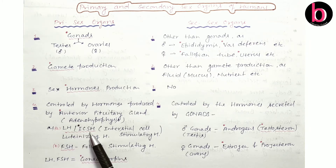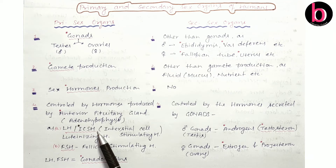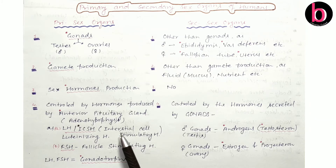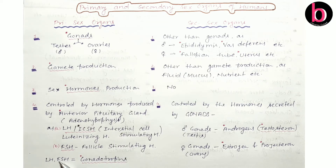LH in the case of human male is also known as ICSH — interstitial cells stimulating hormone — but this term is only used for male; for female, this term is not used. LH and FSH are both considered gonadotropic hormones, or gonadotropins, because they regulate the activities of the gonads.